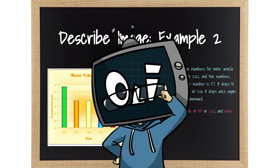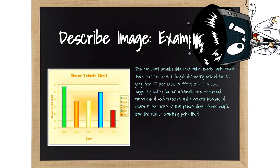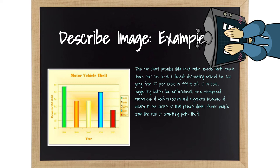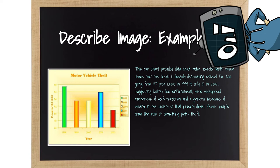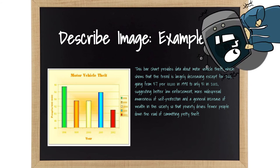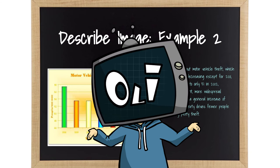Here is the convoluted but far more impressive answer. This bar chart provides data about motor vehicle theft, which shows that the trend is largely decreasing except for 2001, going from 57 per 100,000 in 1998 to only 51 in 2002, suggesting better law enforcement, more widespread awareness of self-protection, and the general increase of wealth in the society, so that poverty drives fewer people down the road of committing petty theft. Yeah, I kind of flexed a bit too hard on this one. This is clearly an exaggeration, so don't ever feel the need to do this in the test. Not only did I add in a bunch of random speculation, I also made the whole thing one sentence.